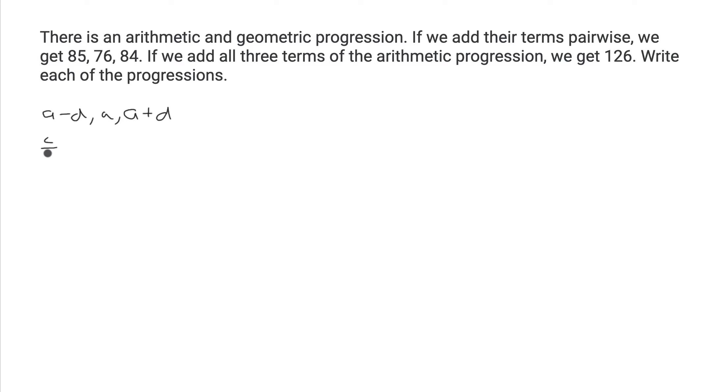We'll also write the other sequence similarly, namely c over r, c, and cr, where r is the common ratio and d is the common additive factor. Adding these three terms together, we get 3a equals 126, which implies that a equals 42.